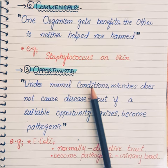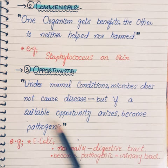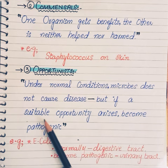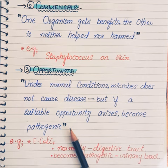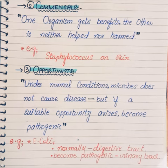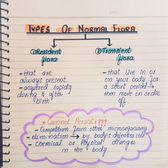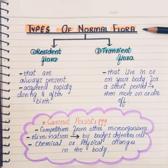Third, we have opportunists. Under normal conditions these microbes do not cause disease, but when a suitable opportunity arises they become pathogenic and cause disease. For example, E. coli is normally present in our digestive tract and does not cause any disease, but when it gets into the urinary tract it becomes pathogenic and causes disease.